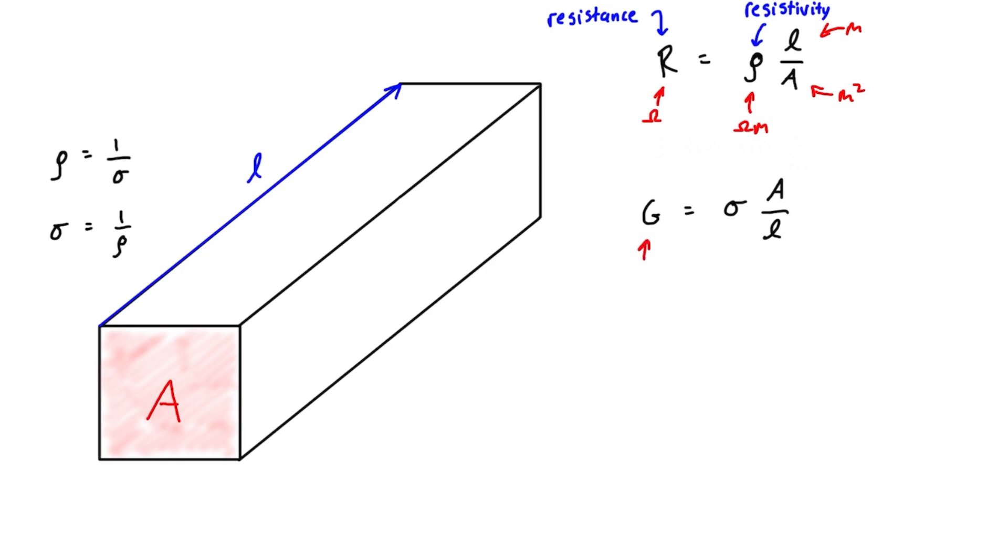Conductivity is in units of Siemens per meter, area is in meters squared, and length is in meters.